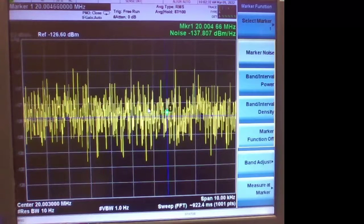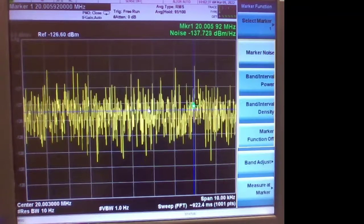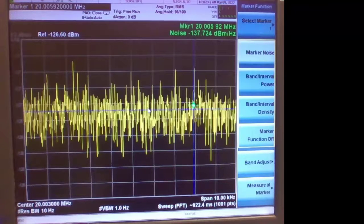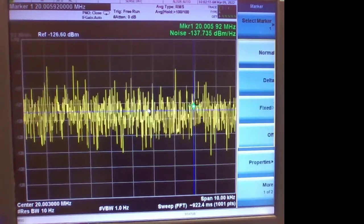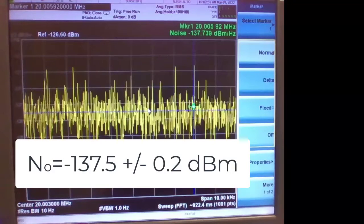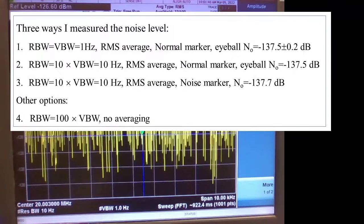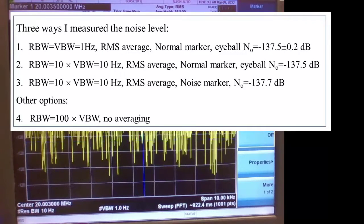But I want to go with the value that I got at the 1 Hertz resolution bandwidth without a noise marker because you might not have one on your spectrum analyzer. So we're going with minus 137.5 plus or minus 0.2 dBm for the noise.